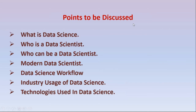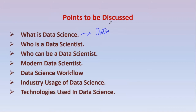Data science is a part of computer science engineering where we completely work with data itself. Everything that involves working with data is what we call data science. It is not like a traditional database — just storing data and manipulating it, or just retrieval and manipulation of data.